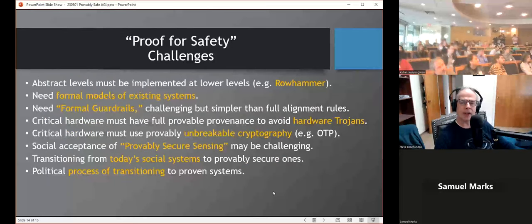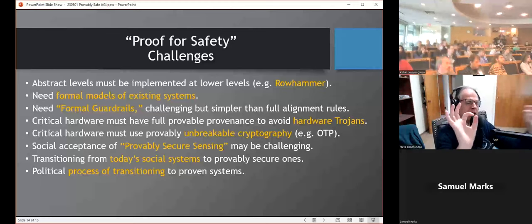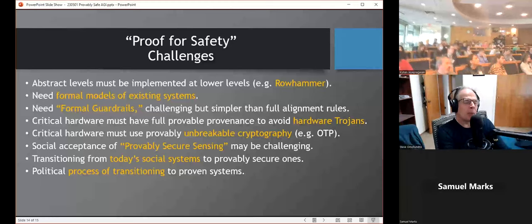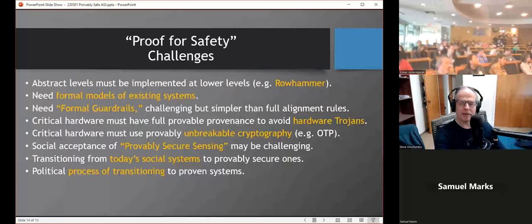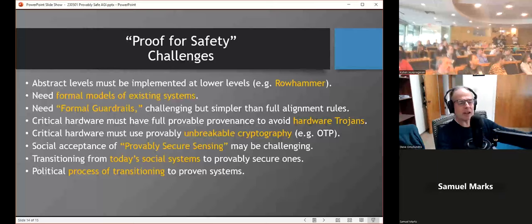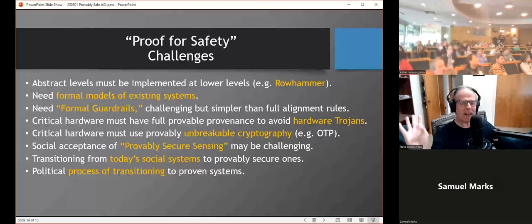So what are some of the challenges in actually bringing that about? First of all, I mentioned the abstract levels have to be implemented at lower, more physical levels. Like an abstract processor, clean, nice abstraction, but the physical hardware it's on may have flaws. Like typical memory now is subject to row hammer. If you access the memory in the wrong way, you can get it to flip bits. Well, the system, we need to have proofs of all of that. That's a huge challenge. We need formal models of all the existing systems. Auto-formalization can help there. In addition to just formalizing mathematics, we can also give it programming language manuals and hardware manuals and so on and formalize all of that. So I think that's a whole direction that we need to go in.